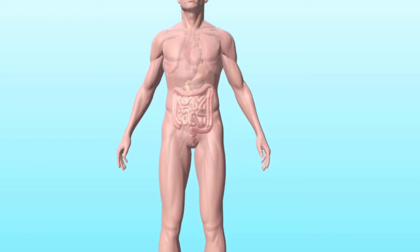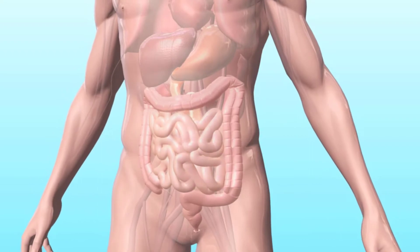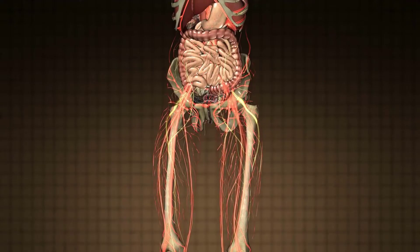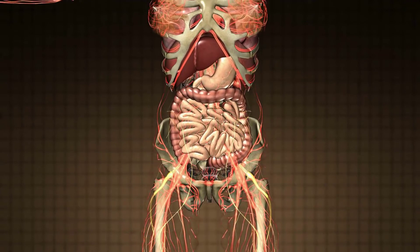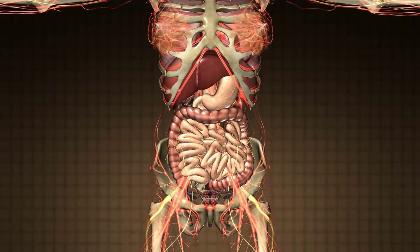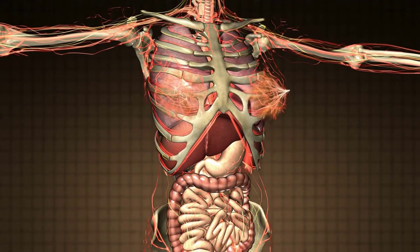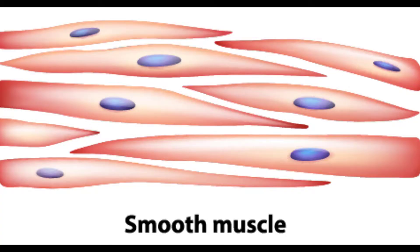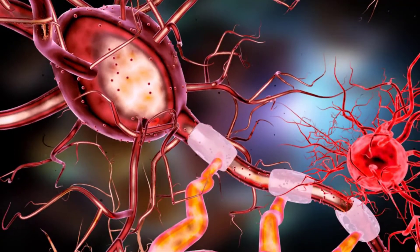Smooth muscle contractions are responsible for involuntary movements of internal organs. It forms the contractile components of the digestive, urinary, and reproductive systems, as well as airways and arteries. Each smooth muscle cell is spindle-shaped with a single nucleus and no visible striations.